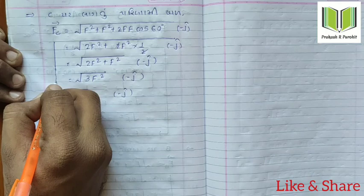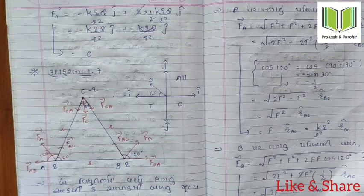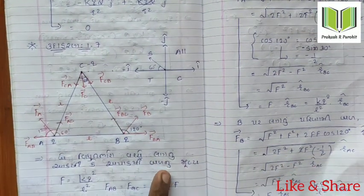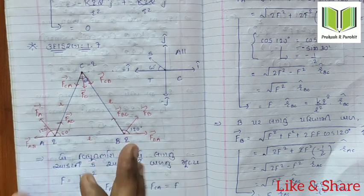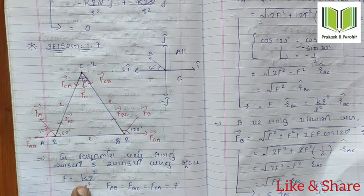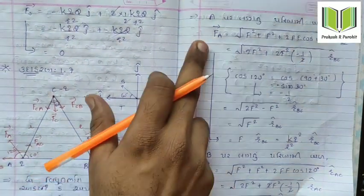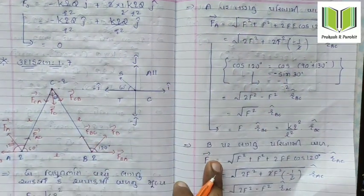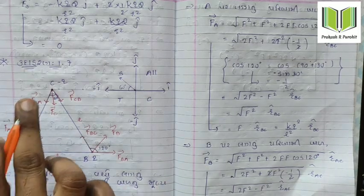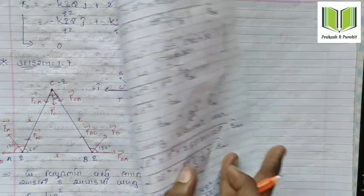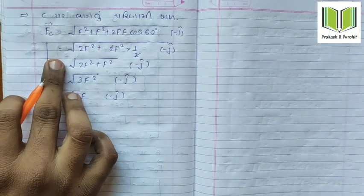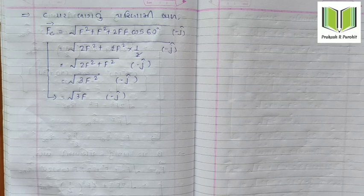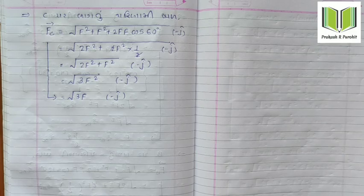So we found the forces for each pair: A B, B C, and A C. We put all of these together and this is the final answer for the resultant force between the pairs.